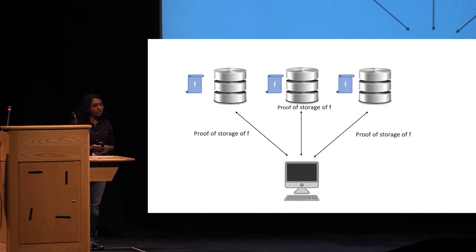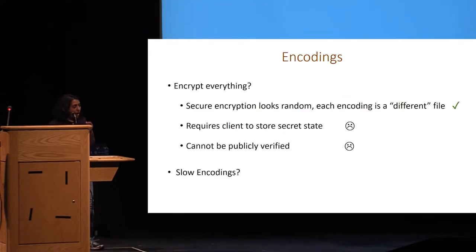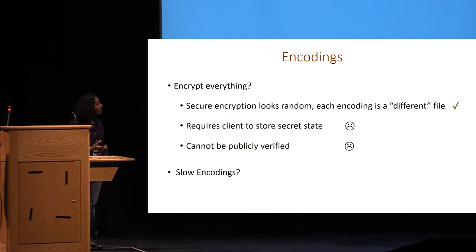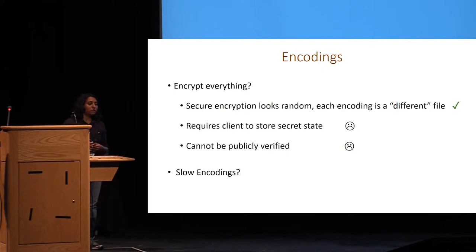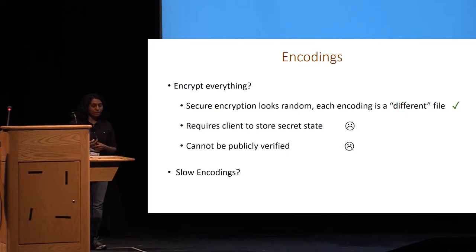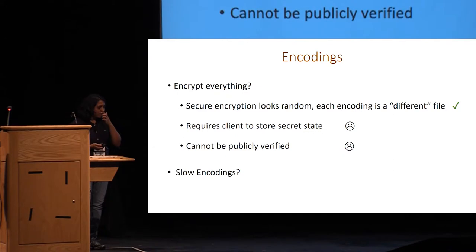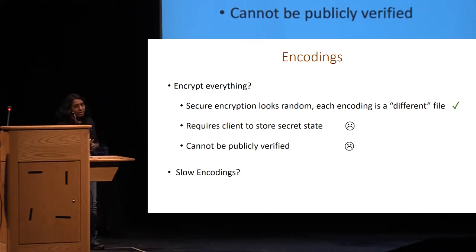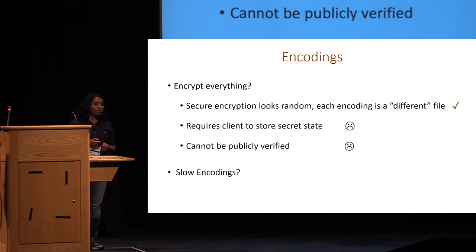To talk about proof of replication, we really need different encodings of the file. One idea is to simply use encryption — the client can have each encoding be a ciphertext of the file stored using fresh randomness for every replica. As far as the adversary is concerned, each encoding is a different file and the server has to store all the ciphertexts. But this requires the client to store a secret state — the encryption key — and additionally, this is not publicly verifiable. Ideally, everybody should be able to retrieve the file later, and if we simply use encryption, sharing the key with other users means collusion with the server breaks security.